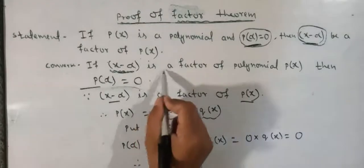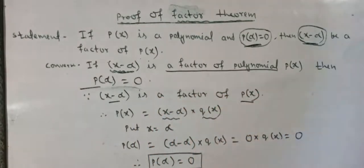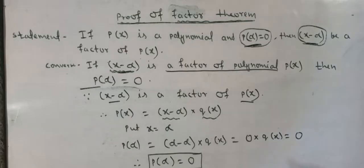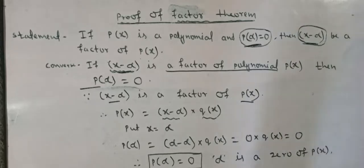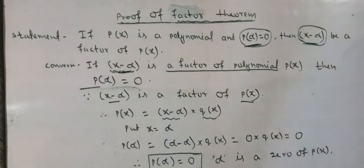In this case too, the proof is complete. When x minus alpha is a factor of px, p(alpha) becomes 0. p(alpha) equals 0 means alpha is a zero of px. I hope you have understood this proof of the Factor Theorem — the converse is also proved. Thank you for watching.